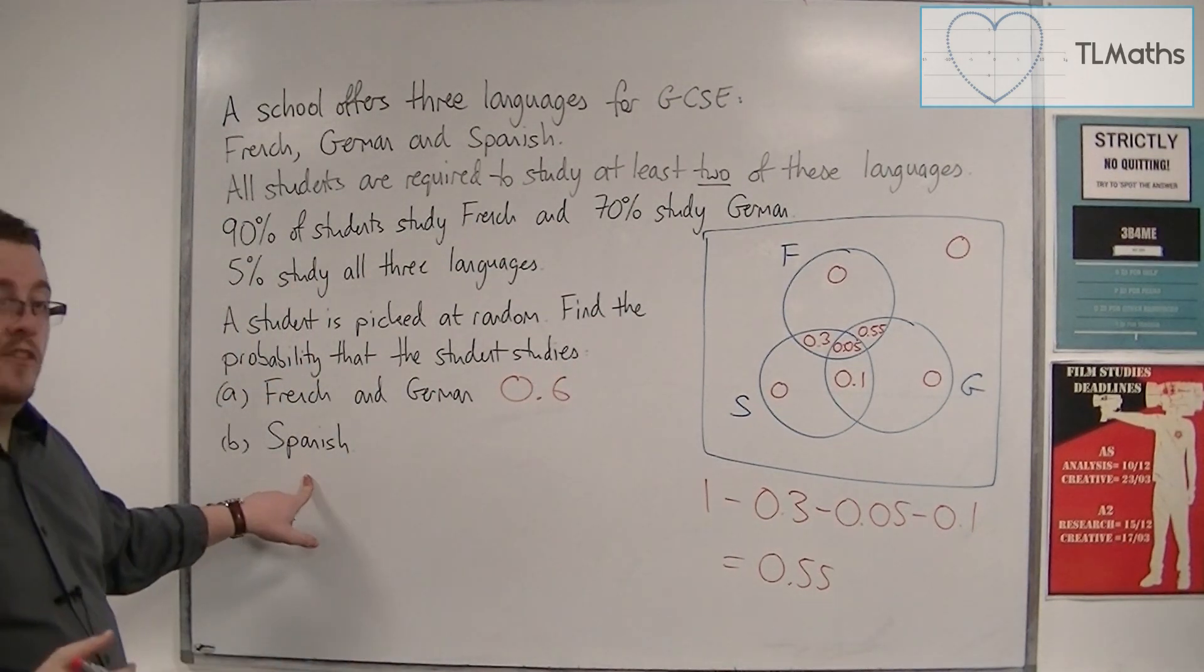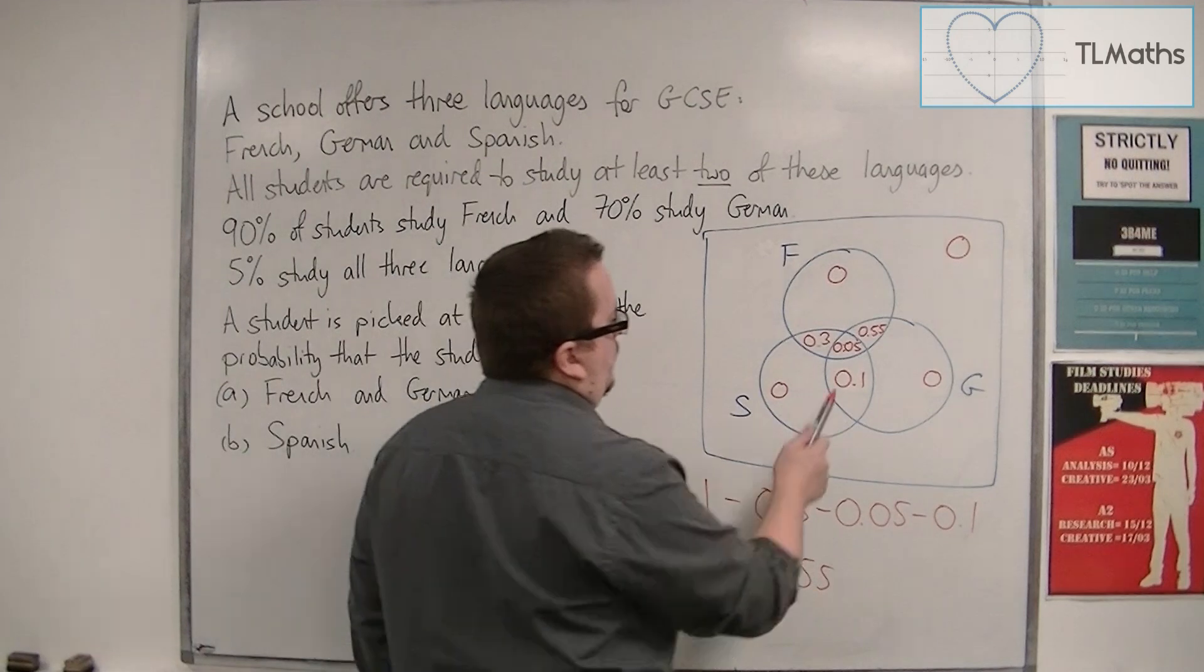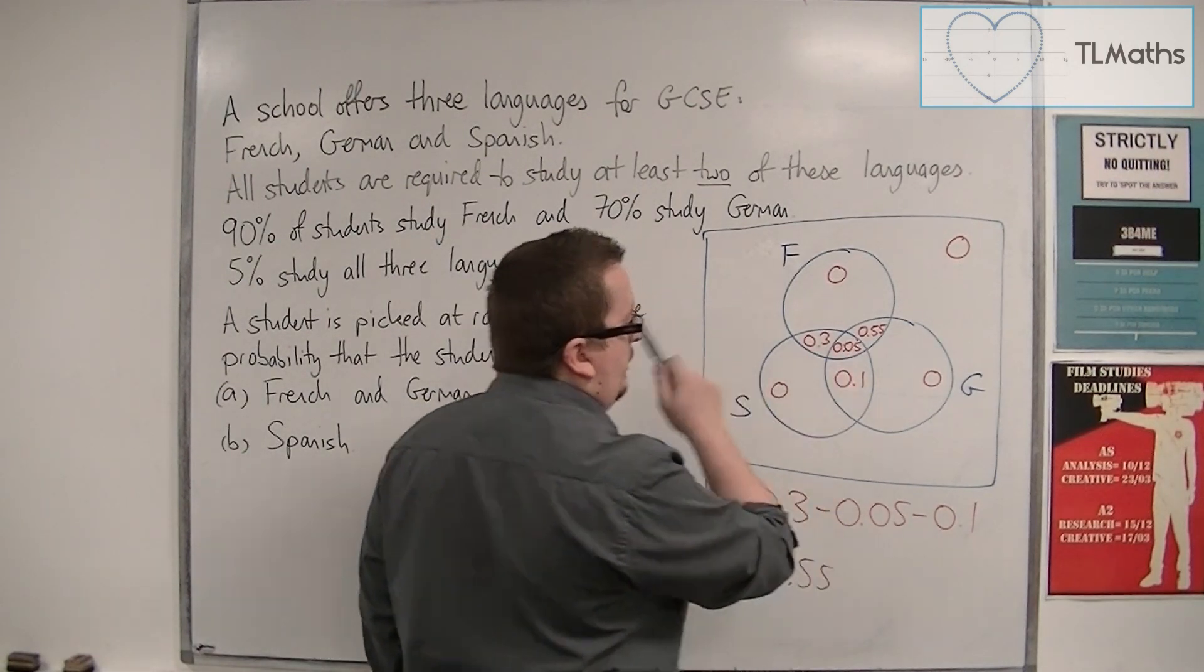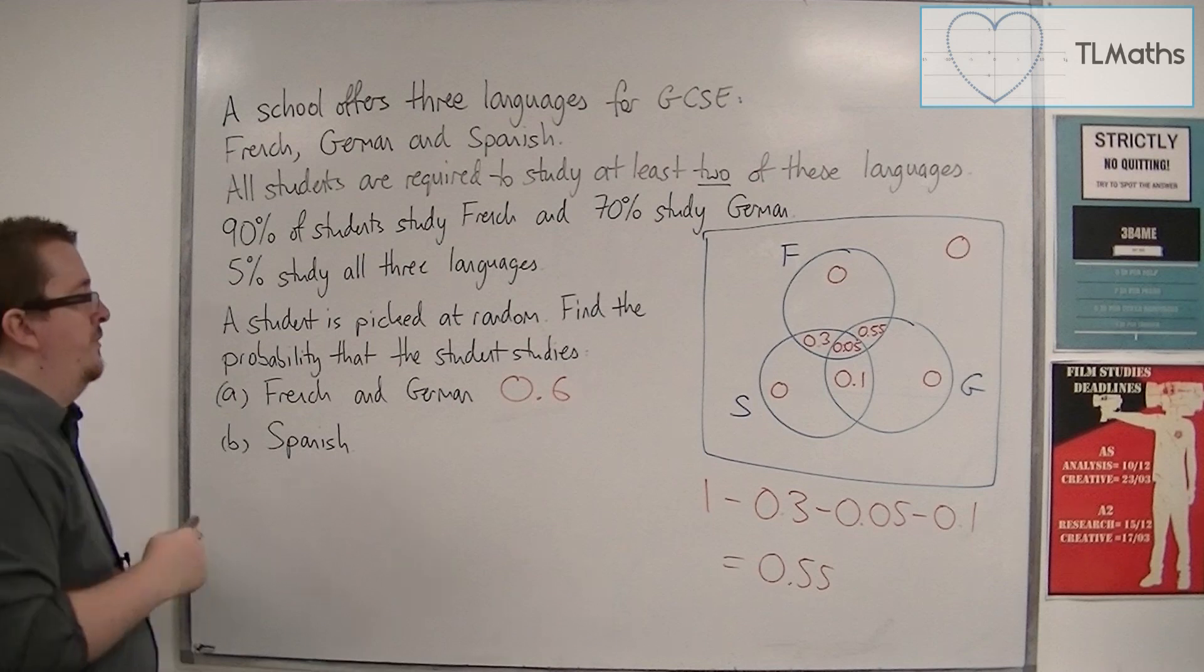And the probability of them studying Spanish, well, it's 0.3 plus 0.05 plus 0.1, which is 0.45.